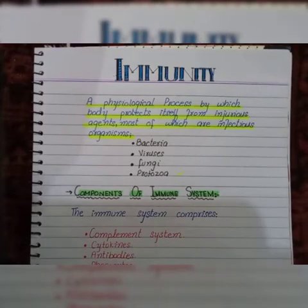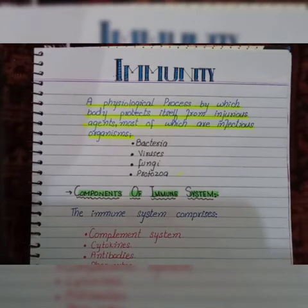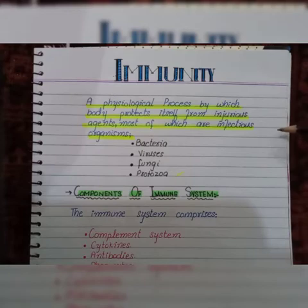So let's see what immunity is. As is evident from the term itself, it means protection — protection from diseases, especially infectious diseases. We can also define it as a physiological process by which the body protects itself from injurious agents, most of which are infectious organisms such as bacteria, viruses, fungi, and protozoa.